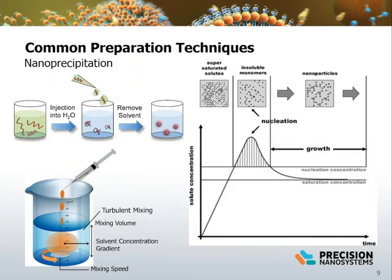The separation of nucleation and growth is key for the formation of nanoparticles with low polydispersity. Very short mixing times, or fast mixing, help ensure uniform particle formation. In the case of beaker methods, the mixing is slow and not uniform. The local environments within the bulk solution have varying amounts of organic solvent and aqueous buffer, resulting in different levels of supersaturation and different nucleation rates, leading to different stages of growth. The result is larger and more polydisperse nanoparticles.